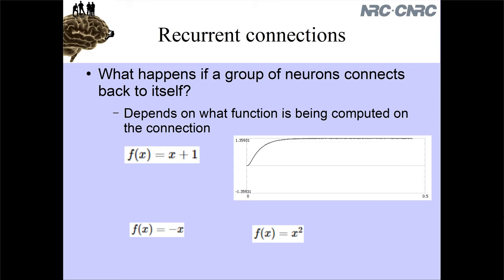The core thing of smoothing - ending up with some sort of smooth system whenever we have a synapse - is going to be really important in order to understand what recurrent connections are going to do. Recurrent connections: what happens if a group of neurons connects back to itself? So far I can make a group of neurons, connect it to another group, and make the connection weights approximate some function. Well, what's going to happen if I just connect a group of neurons back to itself? Even that is confusing - if the neuron is representing value x and I connect it back to itself computing x squared, what is that group of neurons going to end up doing?